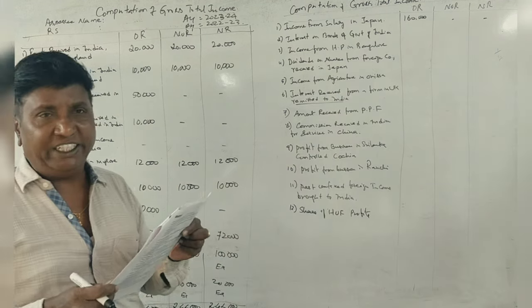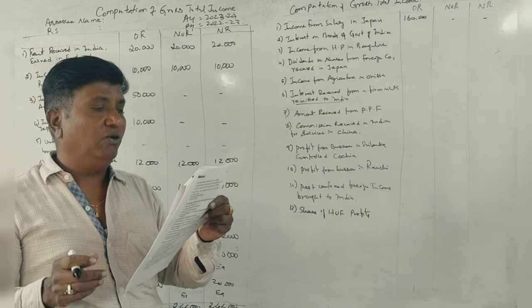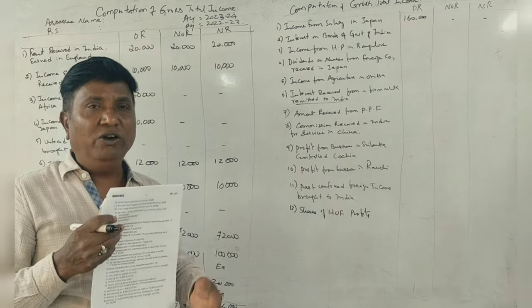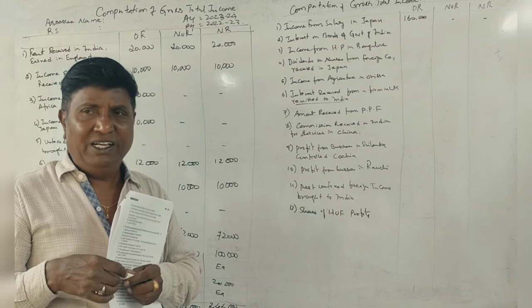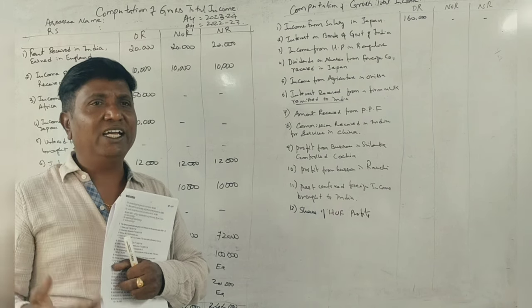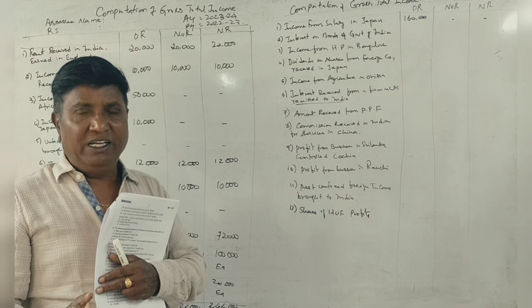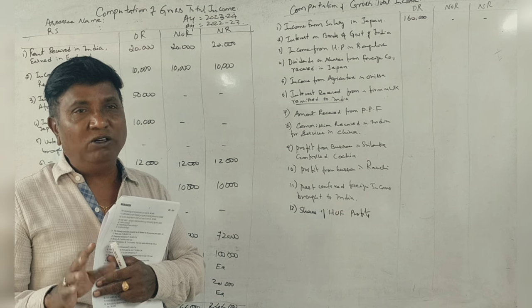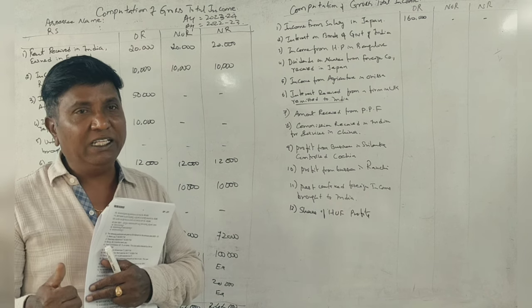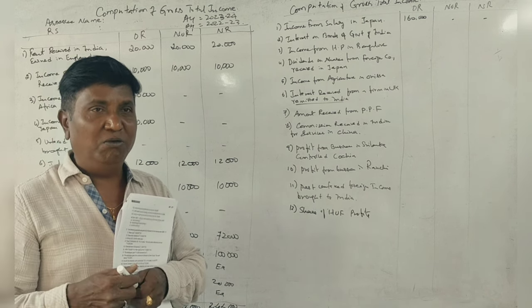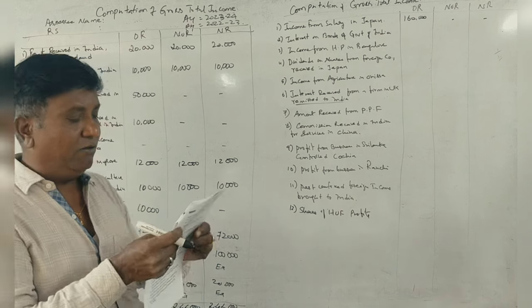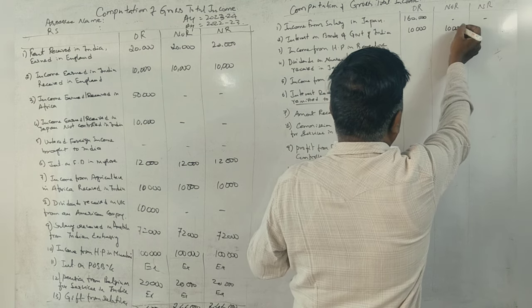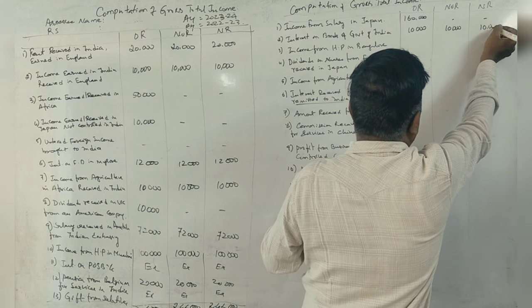Next, interest on bonds of the government of India. If you purchase the government of India bonds, you can purchase foreign or Indian bonds. What bonds are the government of India? India. Do you want to get the tax money? Yes. What bonds are the government of India? 10,000. So 10,000 taxable in all three cases. Correct? Yes, sir.